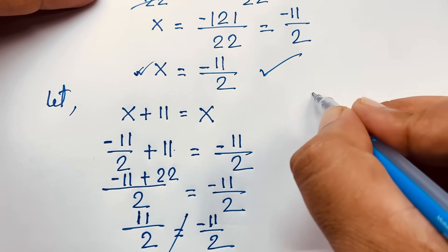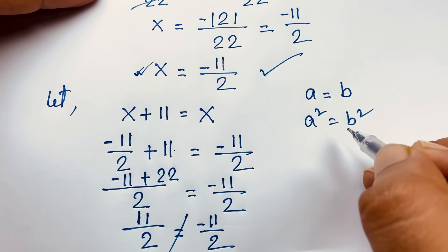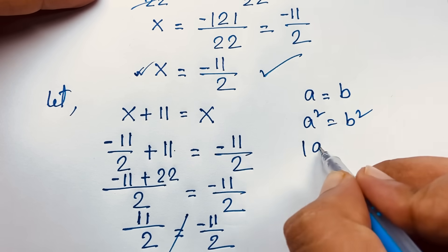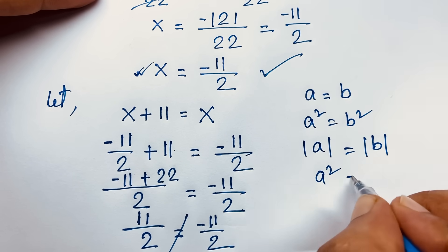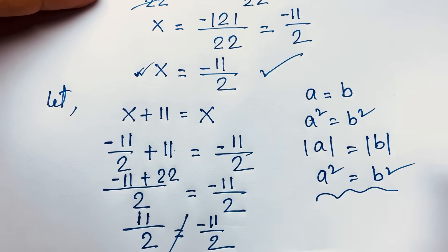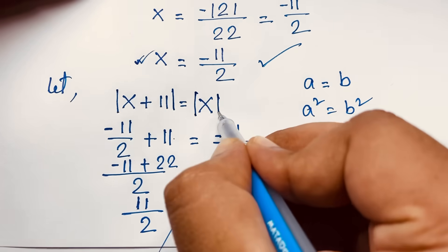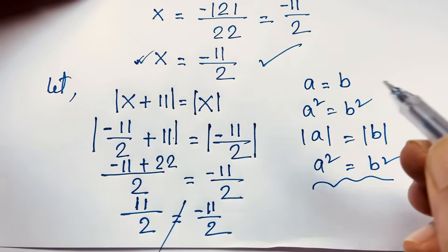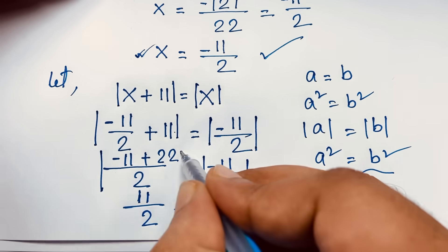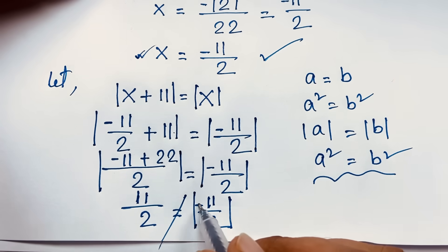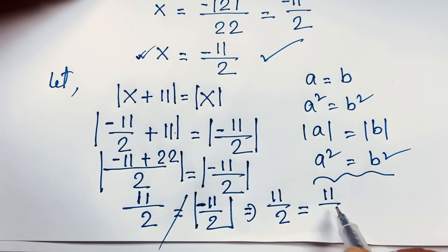But why? We know that if a is equal to b, it does not mean a square is equal to b square — they are not necessarily equal. But if we take the absolute value of a equal to absolute value of b, then a square is equal to b square. Both are equal. Because if we take absolute values, the result is a positive value, so the negative becomes positive. This time it will be 11 over 2 equal to 11 over 2.